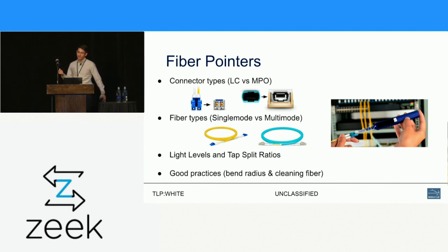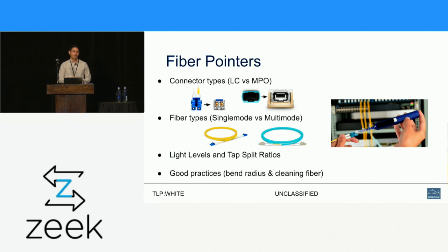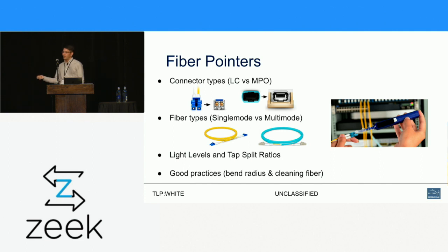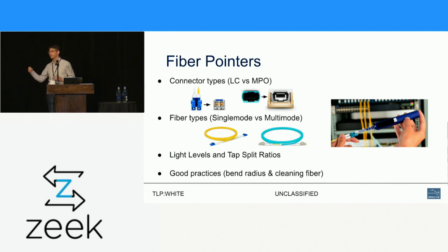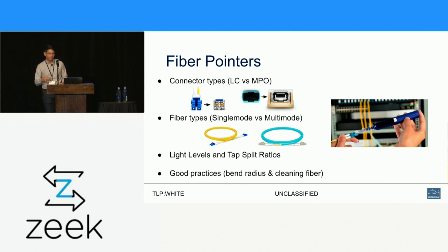One of the first pitfalls with fiber is understanding the link and the connectors. The most common ones in data centers these days are LC and MPO. You need to know whether your fiber is single mode or multi-mode, and you can get really into the weeds — is it UPC or APC if it's LC? Is it a Type A or Type B connector if it's MPO? Do you have OM3 or OM4 for your multi-mode fiber? And then there are more obscure things like understanding your light levels on a path.